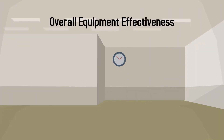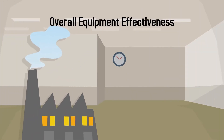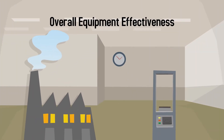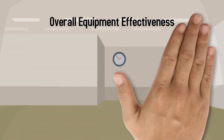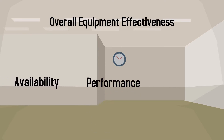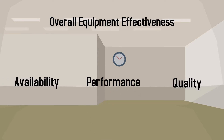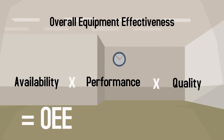Overall Equipment Effectiveness, or OEE, is a manufacturing metric used to determine the productivity of your factory or machinery. OEE is comprised of three separate but measurable components – Availability, Performance, and Quality. They are multiplied together to calculate your OEE.